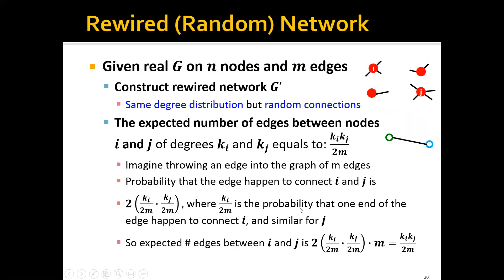To compute this expected number of edges, we introduce the concept of rewired random networks. Given a real graph G with n nodes and m edges, we construct a rewired network G' that has the same degree distribution but random connections. The expected number of edges between nodes i and j, of degrees k_i and k_j, would be equal to k_i times k_j over 2m.